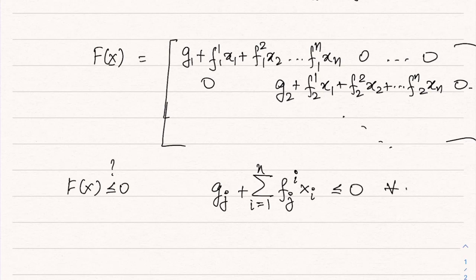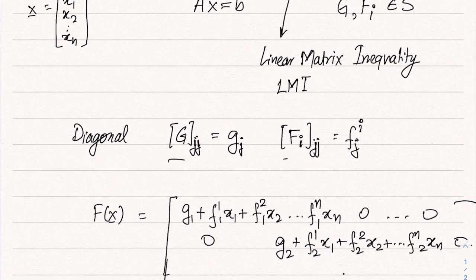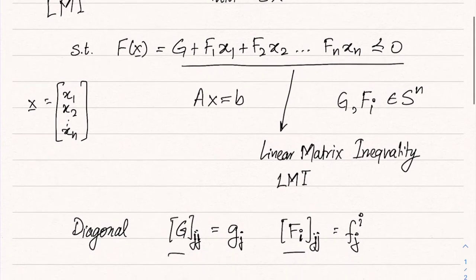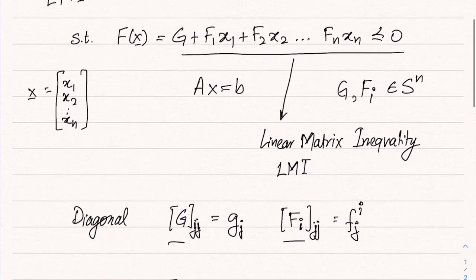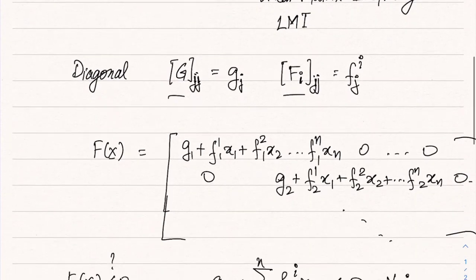This holds for all j, and is simply a linear inequality constraint. So in the special case when g and the fi's are all diagonal, the SDP reduces to a linear programming problem. It is the more complicated cases when they are not diagonal that we need to worry about; for the diagonal case it is simply an LP.